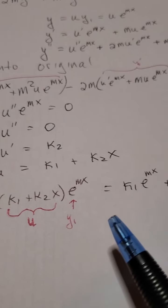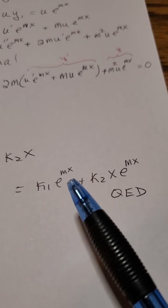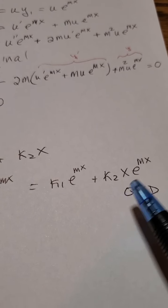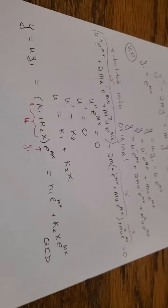And when I multiply it all out, I get k1 e to the mx plus k2 x e to the mx. And that is where the missing x came from.